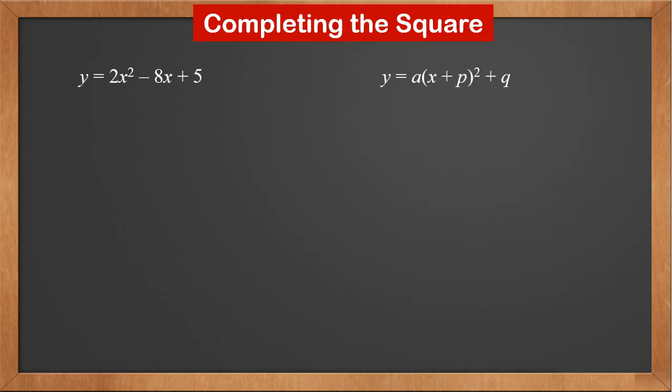Now let's see how to complete the square. We want to transform y = 2x² - 8x + 5 into y = a(x + p)² + q. Let's take out a from the first two terms. This becomes 2(x² - 4x) + 5.